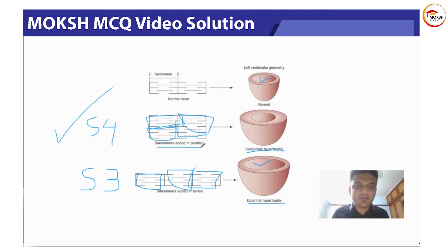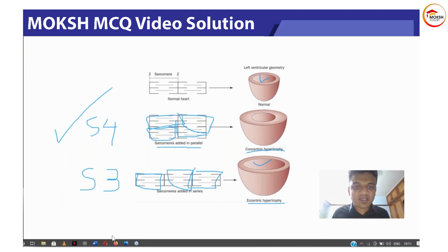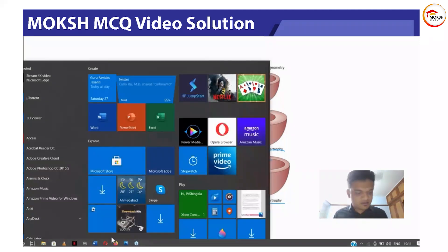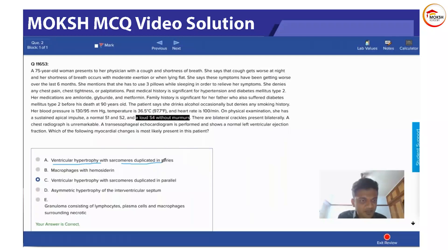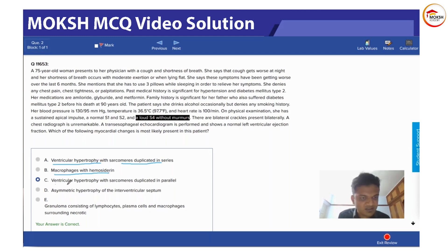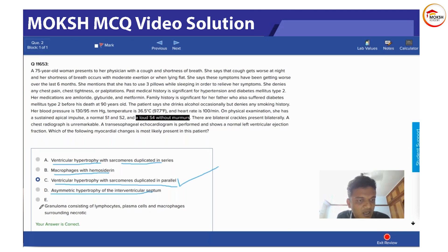According to the question, we are dealing with concentric hypertrophy, which means sarcomeres are added in parallel. Looking at the options: ventricular hypertrophy with sarcomeres duplicated in series — no, that's eccentric. Ventricular hypertrophy with sarcomeres duplicated in parallel — this seems right.